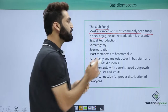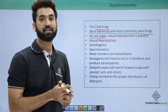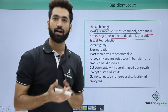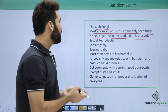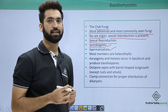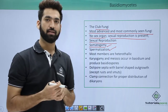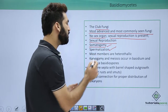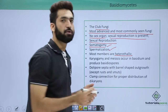There are no sex organs in Basidiomycetes, but that doesn't mean they don't undergo sexual reproduction. Sexual reproduction is present, carried out with the help of somatogamy, where somatic cells fuse, or by spermatization. Both of these methods have been discussed previously. Most members reproduce sexually via somatogamy or spermatization.